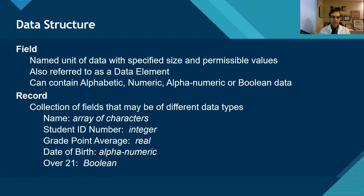When we gather a bunch of fields together, we get a record. Here's an example of what a student record might look like — with a name, a number, a grade point average, a date of birth, and a Boolean — all different data types contained together in one record.